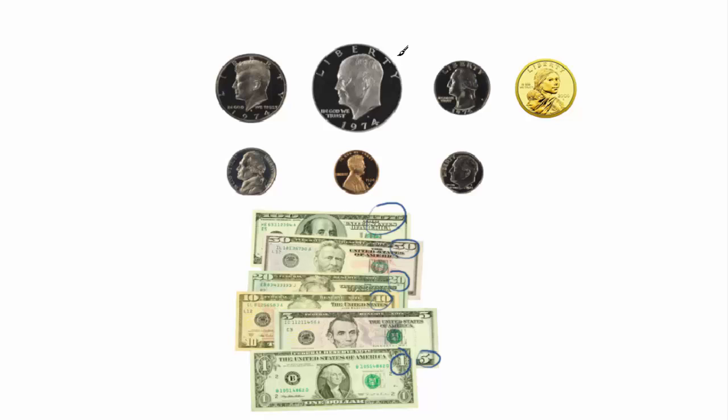This one here is an old Eisenhower dollar, so this is $1 here, but this new one, Sacagawea one here, this is a dollar also. So these two right here are equal to this one, this paper money here.